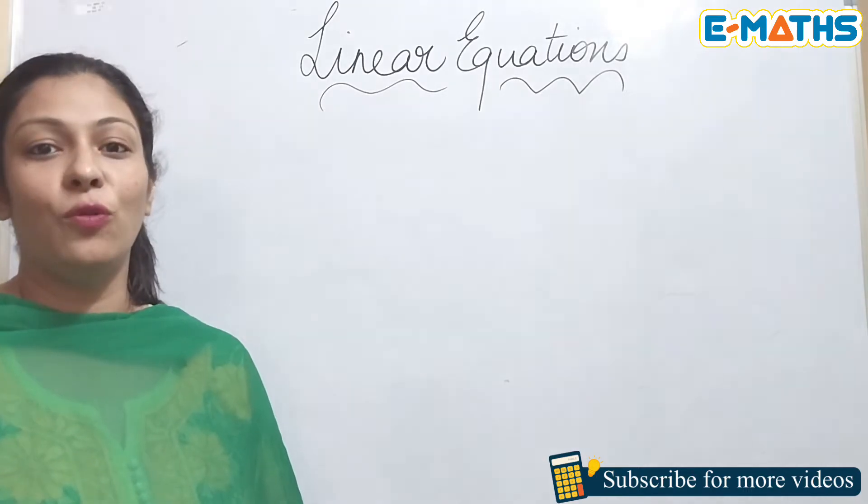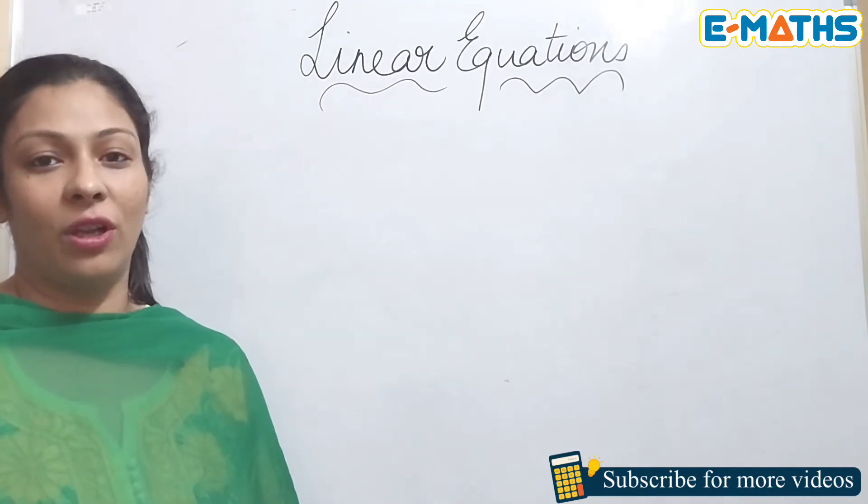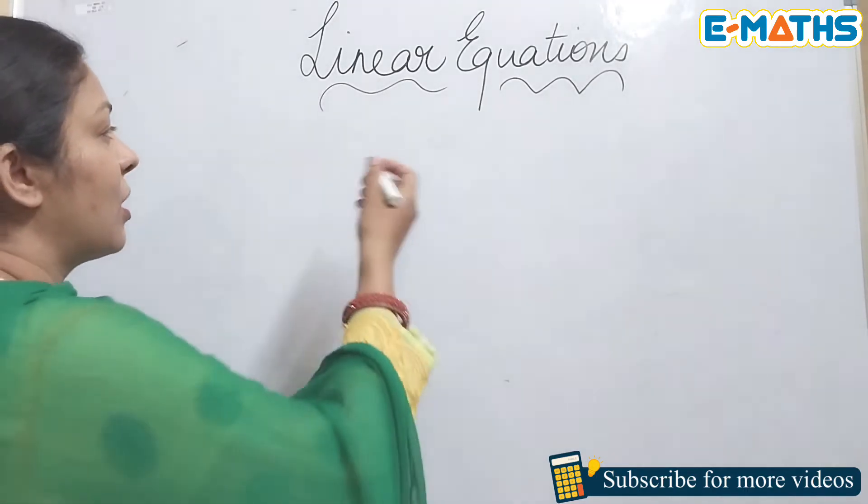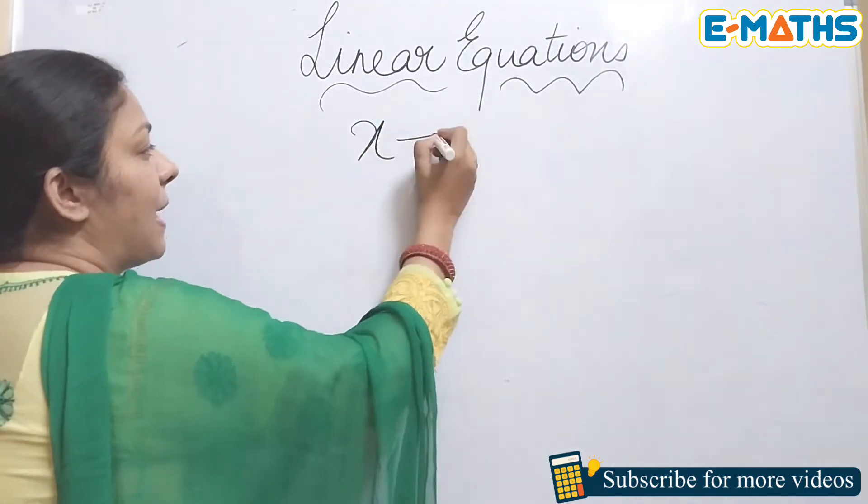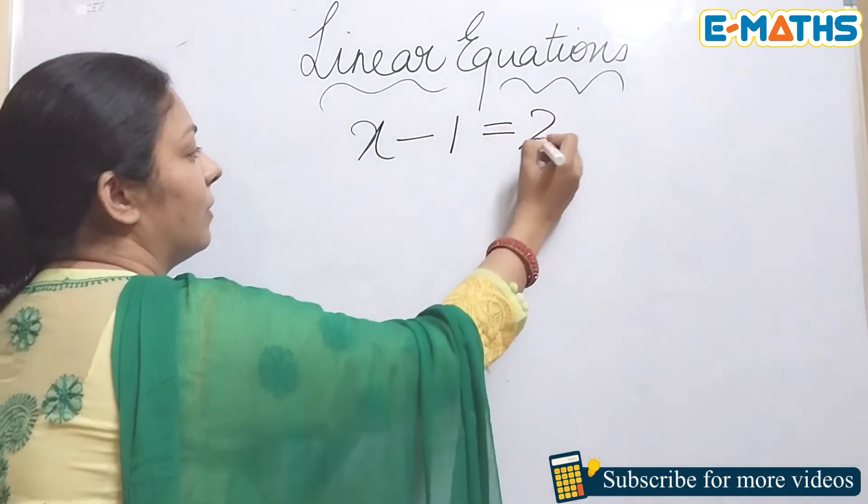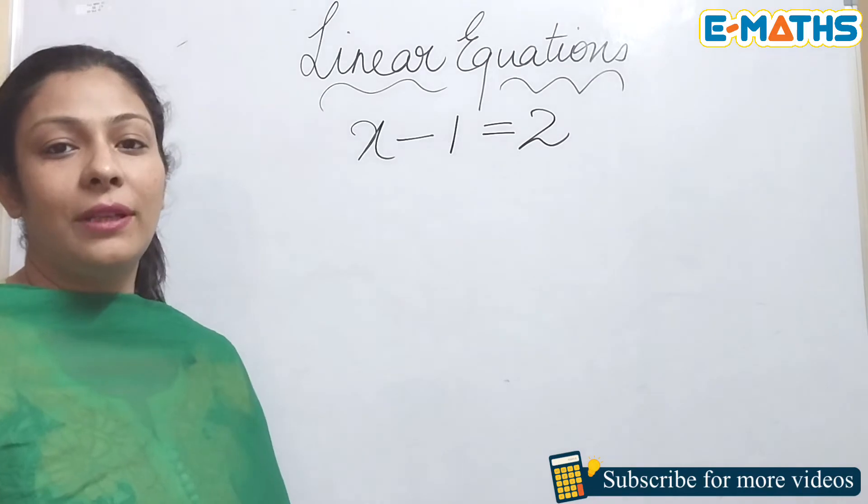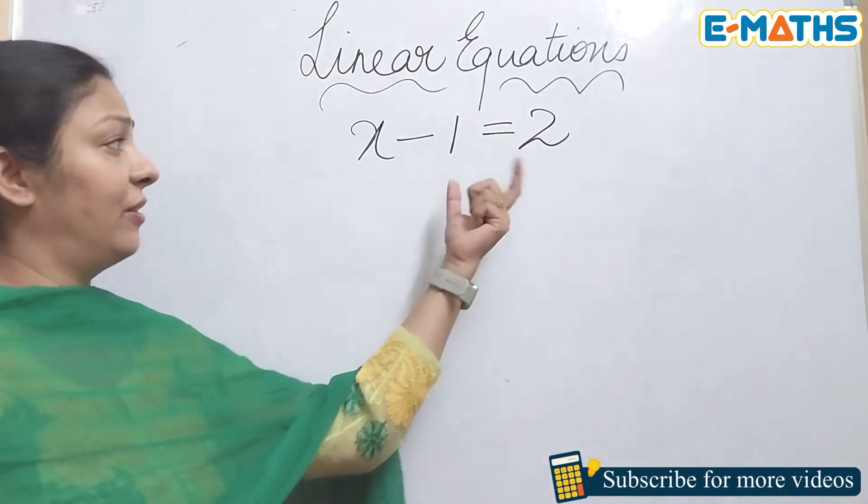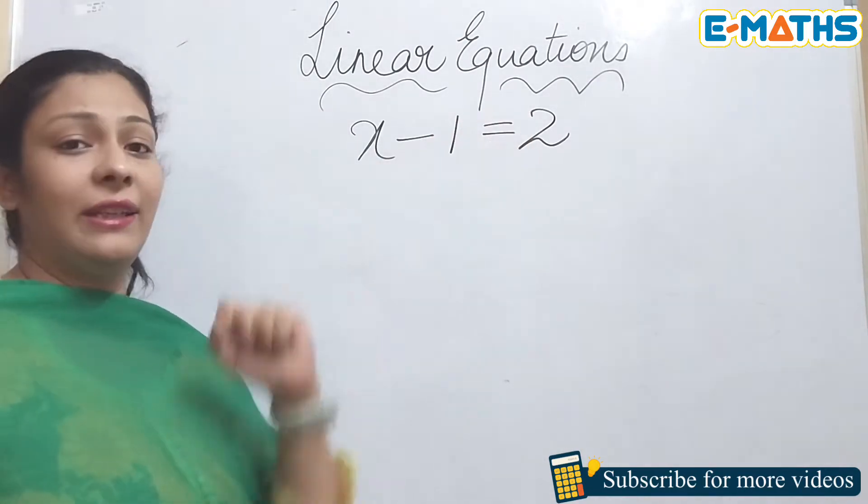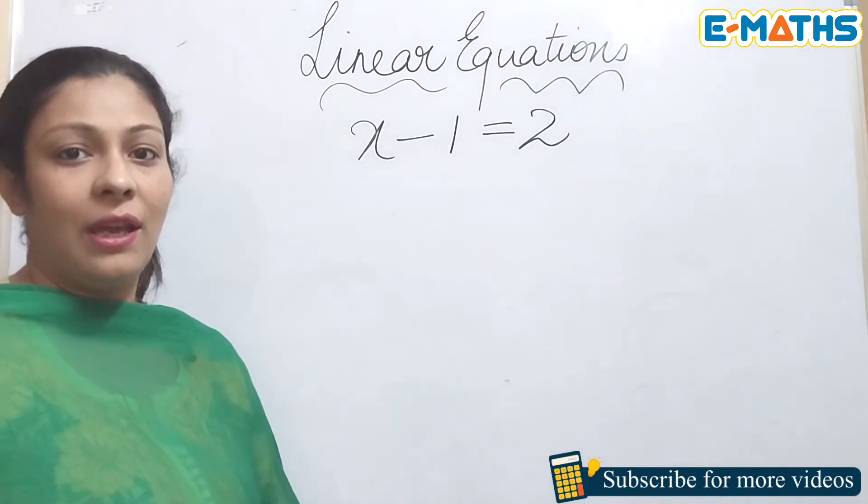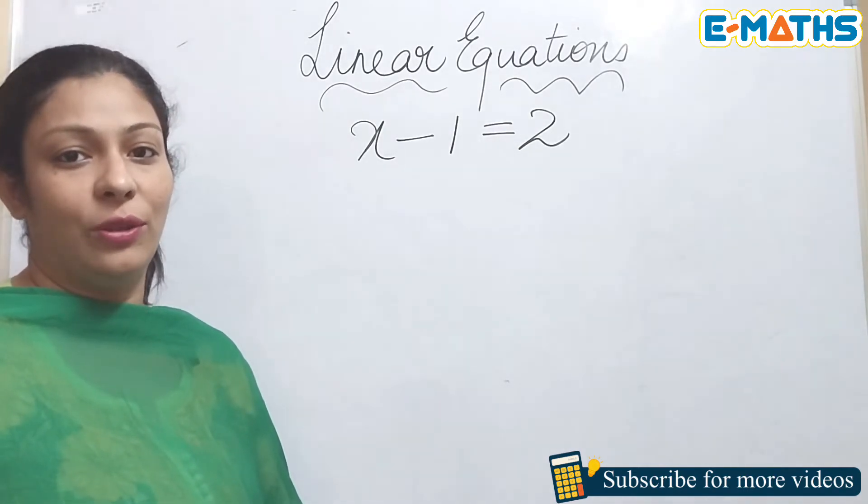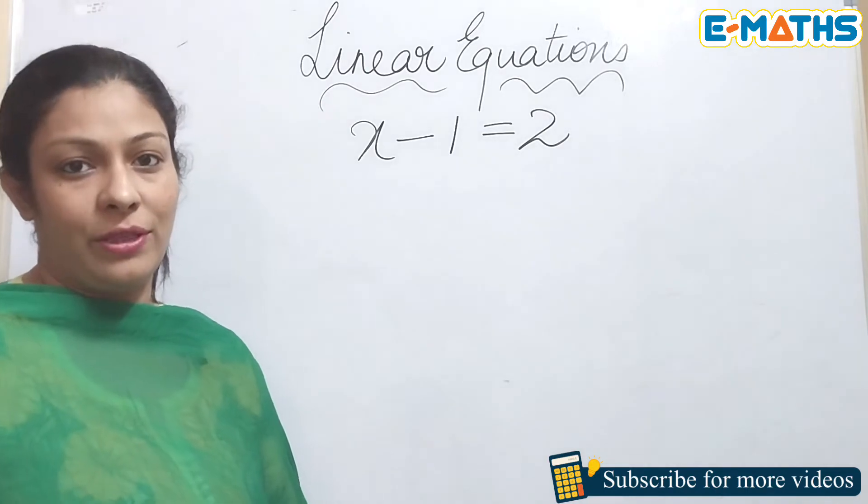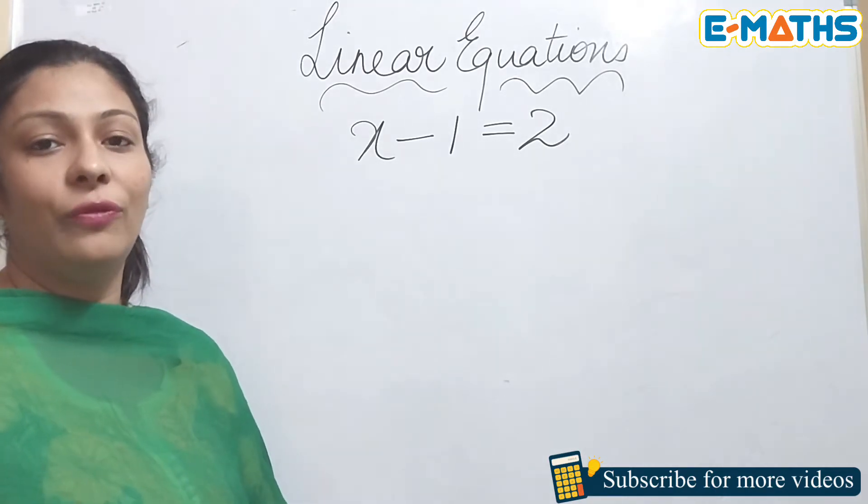So let's move on and see how we can solve linear equations. I'm going to take a very simple example, a simple equation. If this equal sign is there, it means it is an equation and we can find the value of the unknown. That's why we solve equations - only to get the value of the unknown variable.